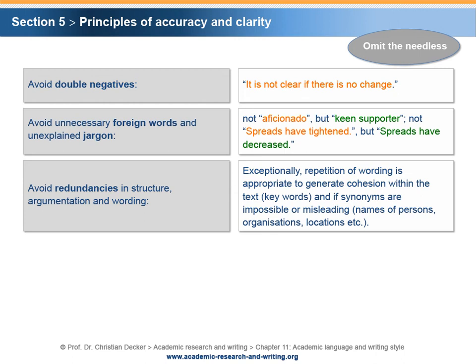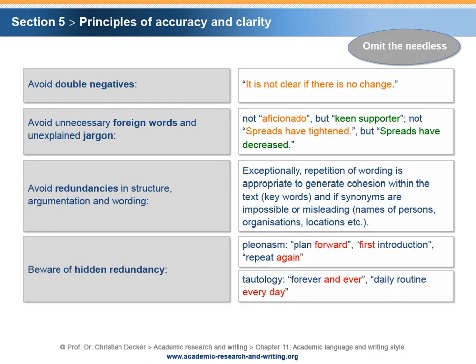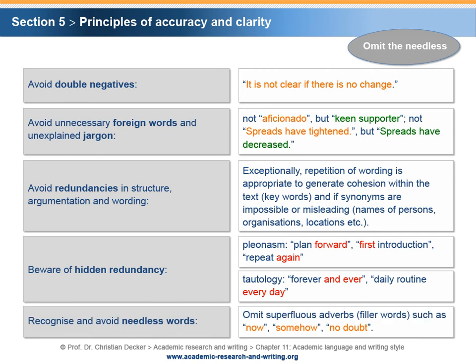Furthermore, certain words have to be repeated if the use of synonyms does not make sense or would even be misleading — this applies especially to names of persons, organizations, geographic locations, and so on. Enhance the quality of your writing by avoiding hidden redundancies such as pleonasms and tautologies. A pleonasm is an expression in which the additional word is implicit, as in 'plan forward,' 'first introduction,' or 'repeat again.' Tautology means saying the same thing in other words — examples are 'forever and ever' or 'daily exercise every day.' Writing is not about piling up numerous words; needless words pollute your writing. Therefore, identify and omit needless words in your text. With a sharpened eye, you will find surprisingly many words that are simply superfluous. A good start to purify your text is to omit filling adverbs such as 'now,' 'somehow,' 'no doubt,' and so on.